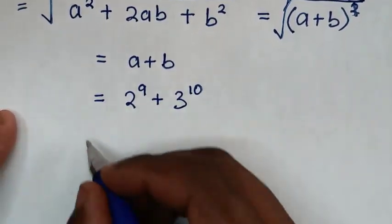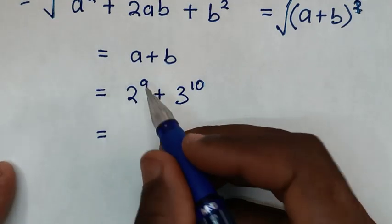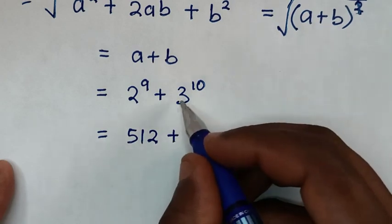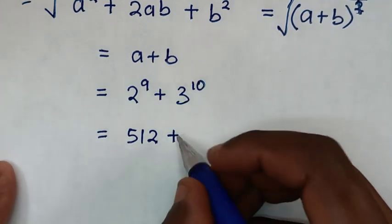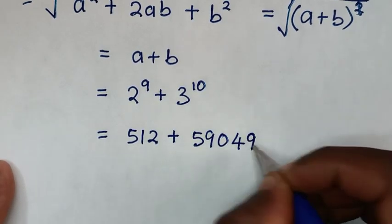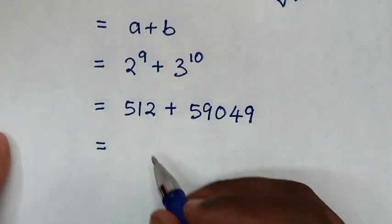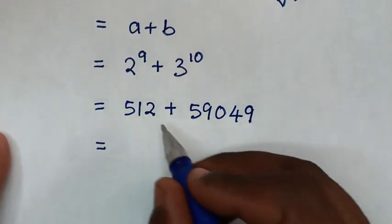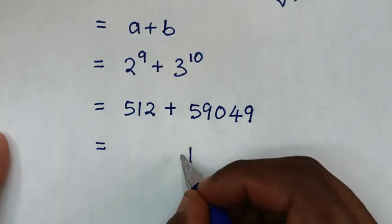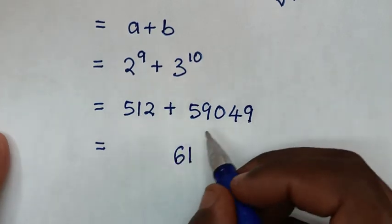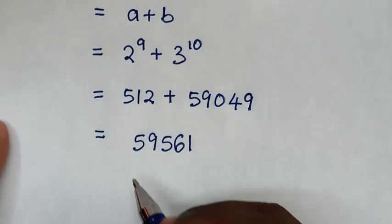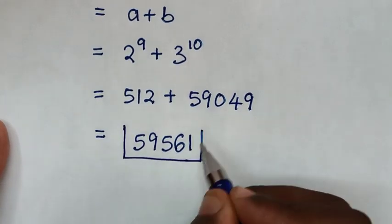Then it will be equal to: 2^9 is 512, then plus 3^10 — we should remember that 3^10 is 59,049. Then the sum is 512 plus 59,049, which equals 59,561. Therefore this is our final answer.